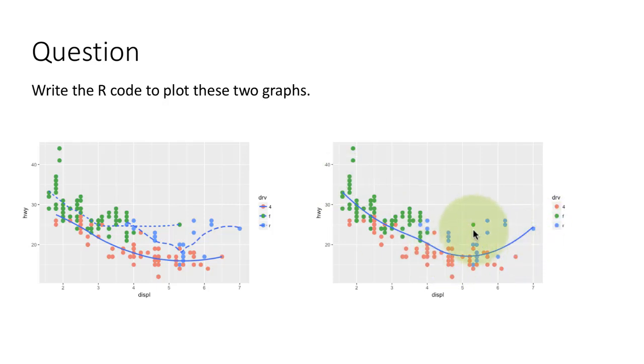But each point is colored differently, right? In fact, that applies to both of the plots. So, in both the cases, the point geom has to have the color aesthetic mapped to drive. The point geom has to have the color aesthetic mapped in both cases. But only in the first case, notice that the lines for the three smooth lines are all of different types. And, therefore, we need to map the linetype aesthetic only for the smooth layer.